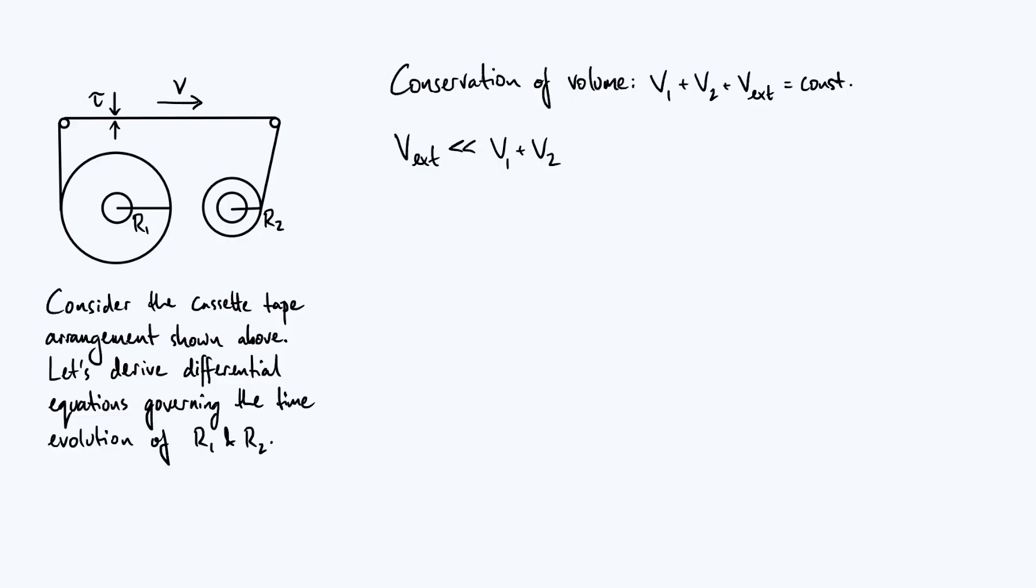Now for most realistic setups, the external volume of tape is going to be much smaller than the volume on the two spools combined. For example, typically for a cassette tape, the total length of tape is a couple of hundred meters.